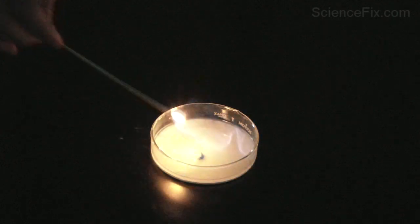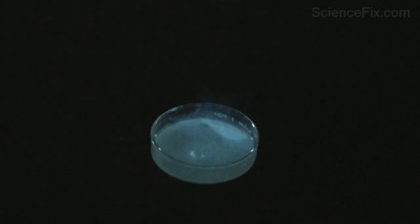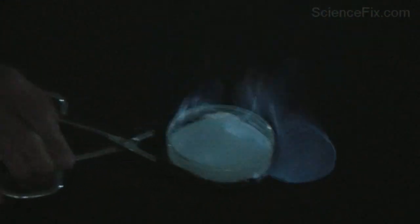And this petri dish is some copper sulfate. Copper sulfate is bluish in color, but when burned, it produces a very bright green flame.